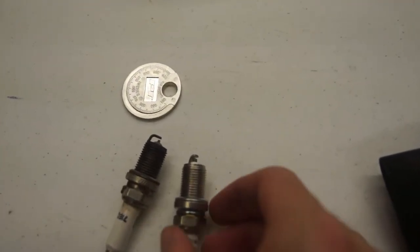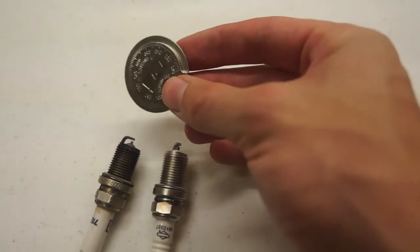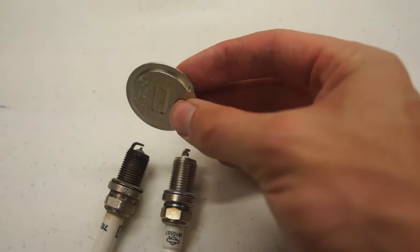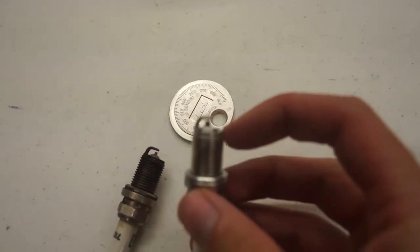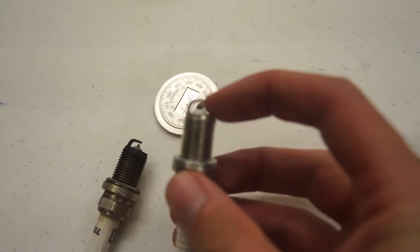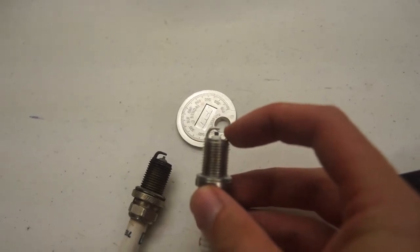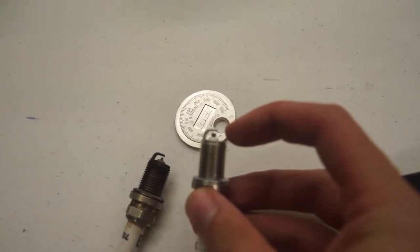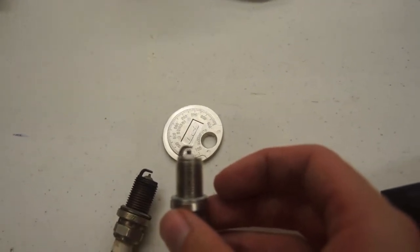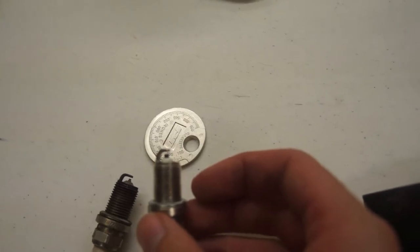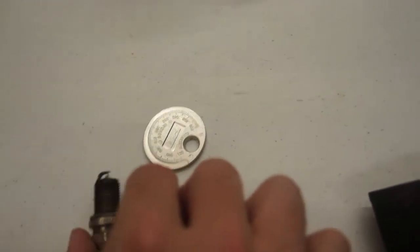One other thing worth mentioning before I put this new plug in is what's called a gap tool. This isn't super important on a lawnmower, but the gap between these two electrodes on the spark plug - the gap between this outer electrode and this lower electrode - is where actually your spark goes between. You want to make sure that that gap is reasonably accurate, reasonably gapped.